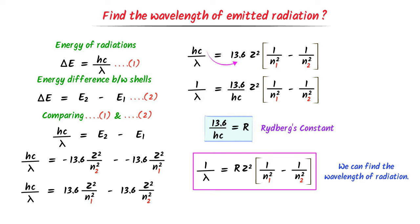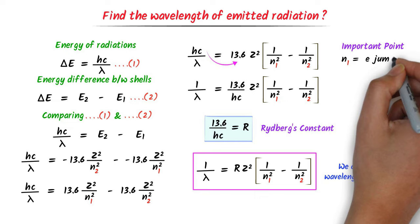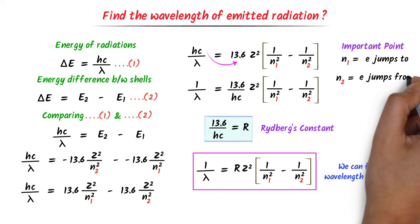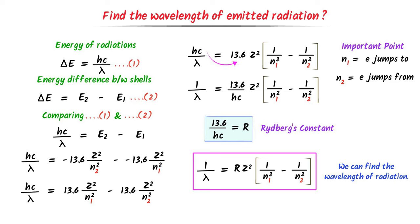Remember: n₁ is the energy level the electron jumps to, while n₂ is the energy level the electron jumps from. I use this trick to remember the equation: '1/λ equals R of Z squared, 1 by n₁ squared minus 1 by n₂ squared' — think of it as 'rate of zebra is 1 by 9 minus 1 by 9.'